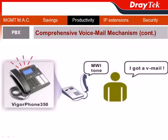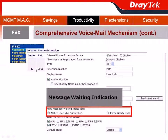Another way to remind Luke he has a voicemail is the Message Waiting Indication, or MWI. When there is a voicemail at extension 2011, if Luke is using the Vigafone 350, he will see a flashing light on his phone. On other phones, he will hear a special dial tone — the MWI tone — to know he has a voicemail. To configure this, go to Luke's extension 2011, check the Message Waiting Indication section, and click Notify User Who Subscribed.